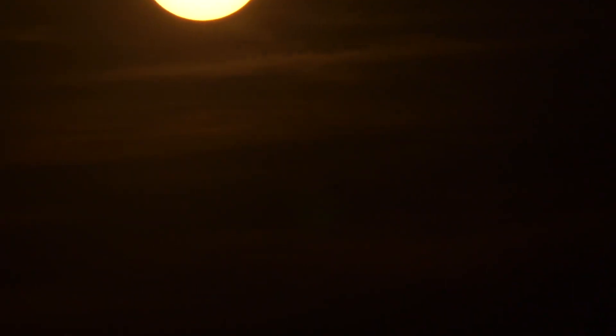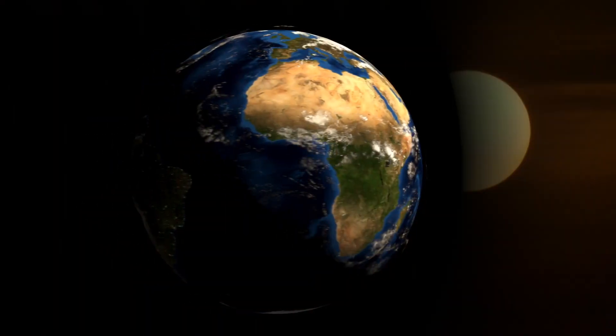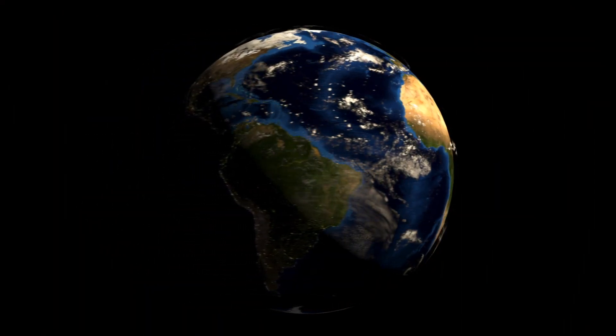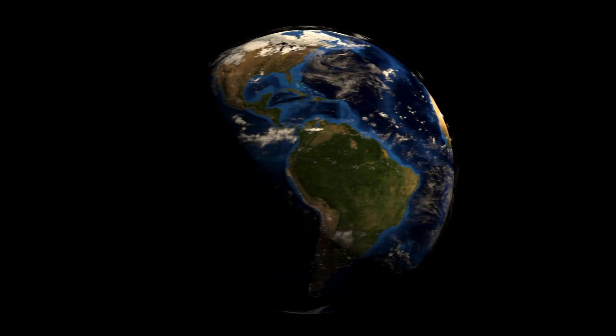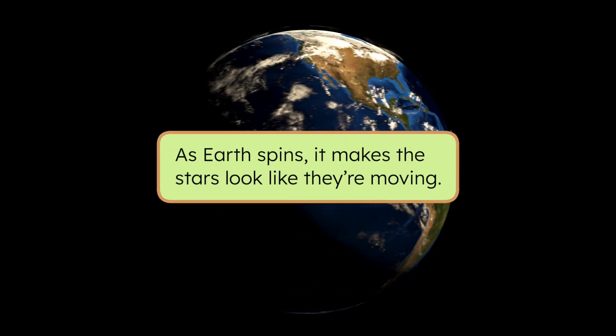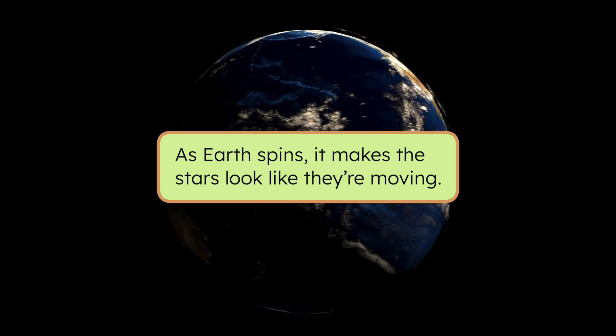But wait a second. Are stars really zipping around the Earth every night? Think about what you've learned before about the Sun. It seems to move across the sky during the day. But why does that happen? Why does the Sun rise and set? It's not because the Sun is moving around the Earth. It's because the Earth rotates or spins on its axis. It's the same with the stars in the night sky. As Earth spins, it makes the stars look like they're moving. But it's really us that's moving.